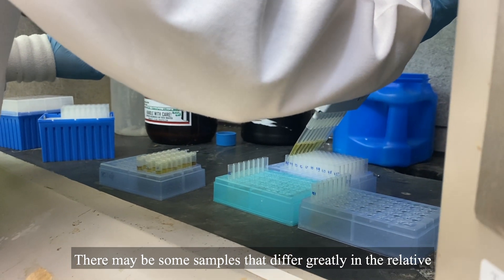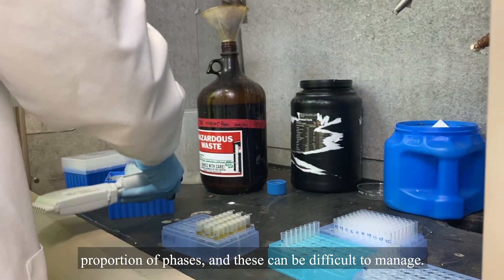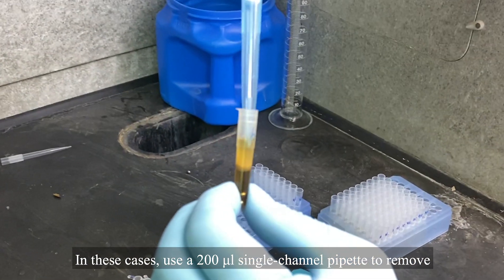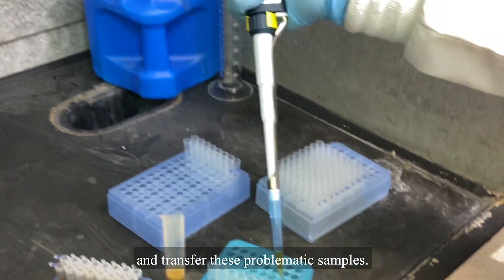There may be some samples that differ greatly in the relative proportion of phases, and these can be difficult to manage. In these cases, use a 200 microliter single channel pipette to remove and transfer these problematic samples.